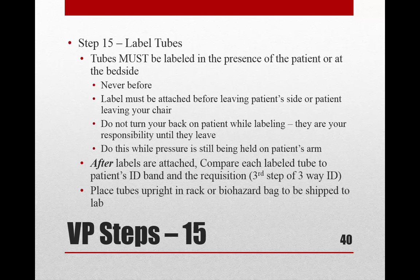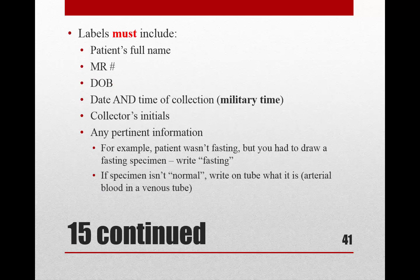Label tubes in the presence of the patient or at the bedside — never before, and do not leave. Stay attentive to the patient. After labeling, compare each labeled tube with the wristband and the requisition — this is the third step of the three-way ID. Some facilities have you hold the tubes up for the patient to verify. Then place them upright and prepare to send to the lab. Required label information includes the patient's name, date of birth, and medical record number — which will probably already be printed — plus the collection date and time in military time, and your initials.